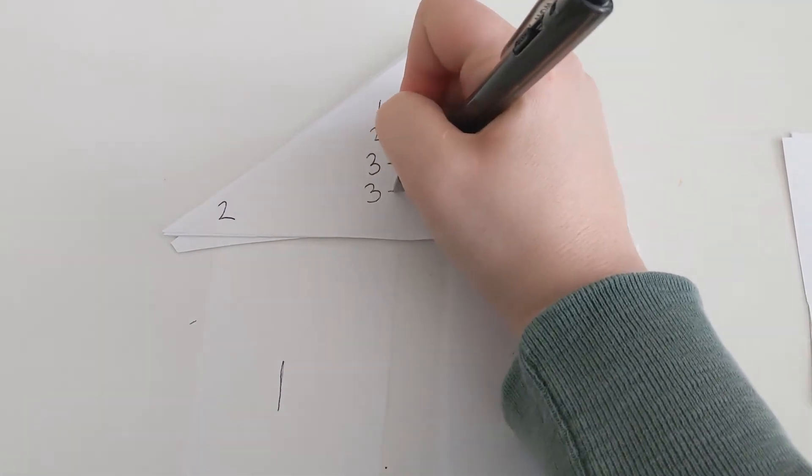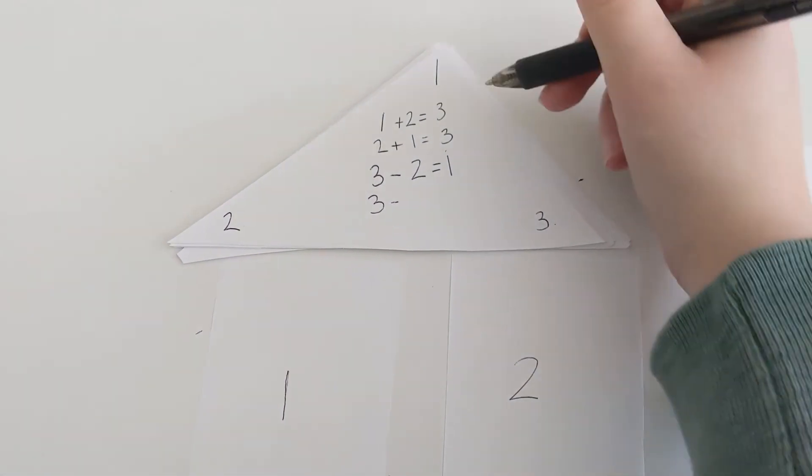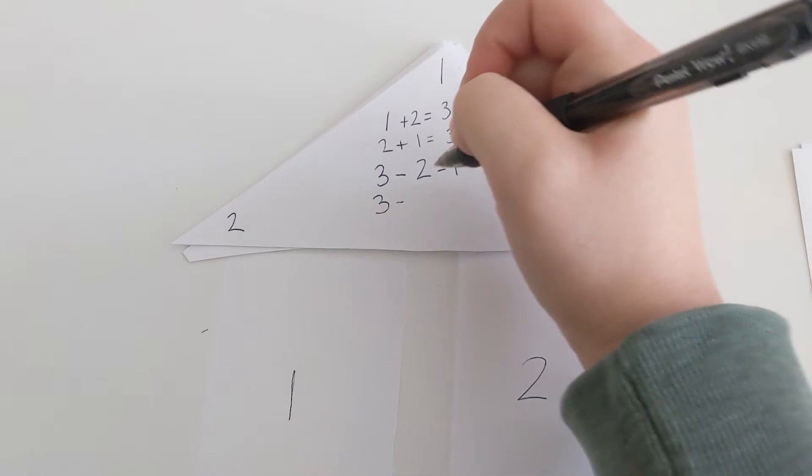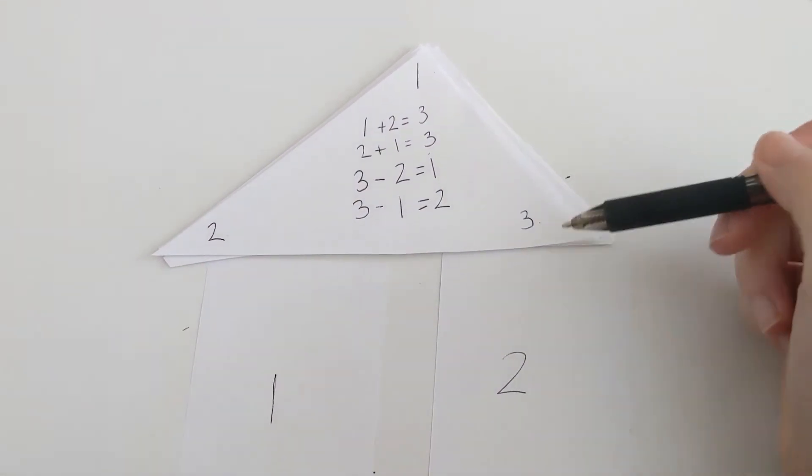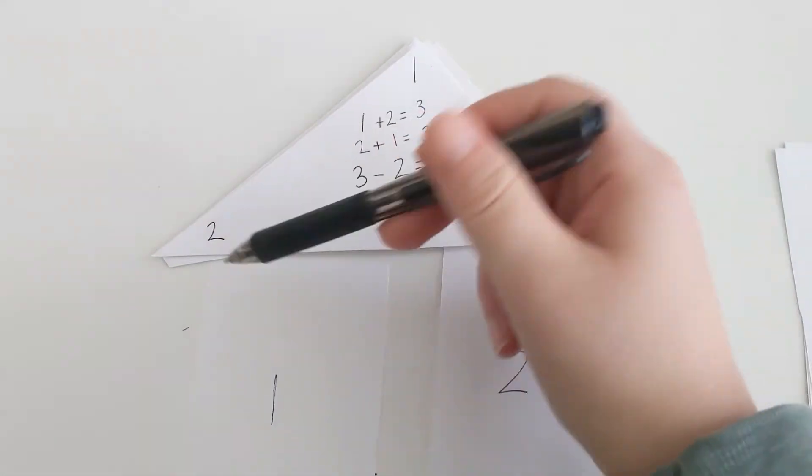Or I can do three minus, I can go the other way around my triangle, three minus one, and that's going to equal two. Our math fact triangle, boys and girls, all three numbers are used.